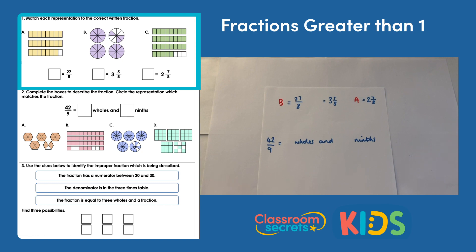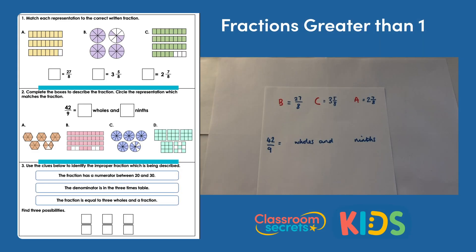That should leave us with C being three and five eighths, but we'll double check. So I have three bars completely shaded, so they're my three wholes, and then I have five out of eight shaded, so that's my five eighths. So I know that C is in the middle and the answer is three and five eighths.